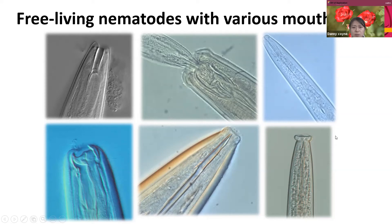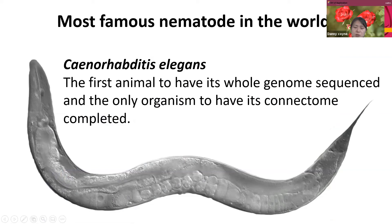Probably the most famous and important nematode in the world is Caenorhabditis elegans. It is the first animal to have its whole genome sequenced, and the only organism so far to have its connectome completed. The connectome is the network of neurons in the brain, so this is the only organism for which we know all neural connections — knowledge we can utilize to understand ourselves better.